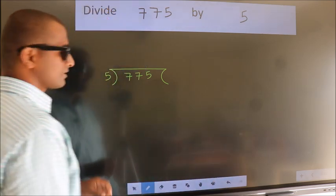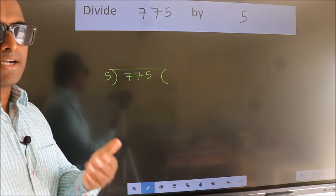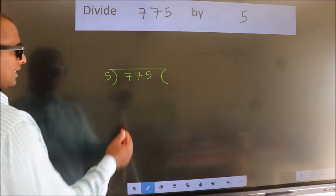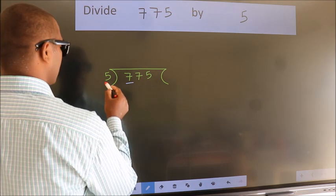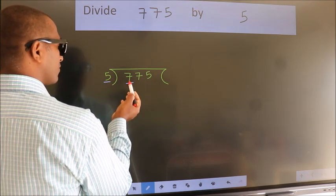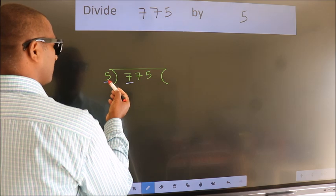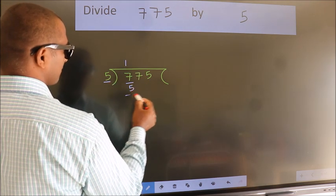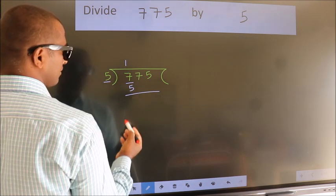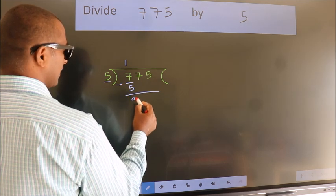This is your step 1. Next, here we have 7, here 5. A number close to 7 in 5 table is 5 once 5. Now, we should subtract. We get 2.